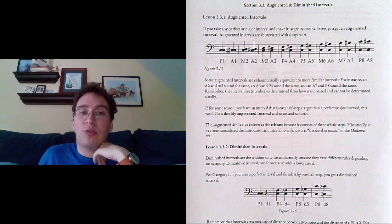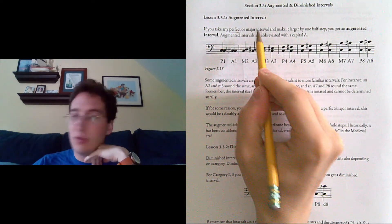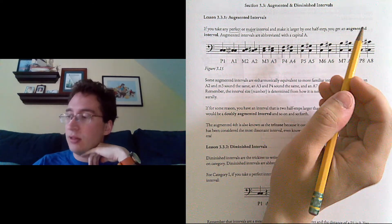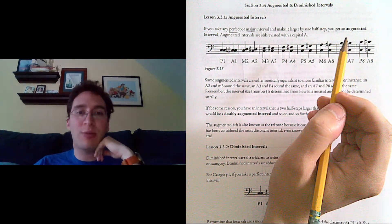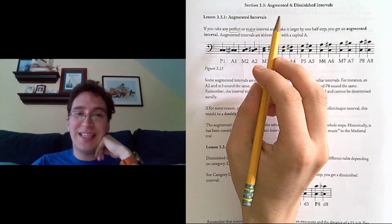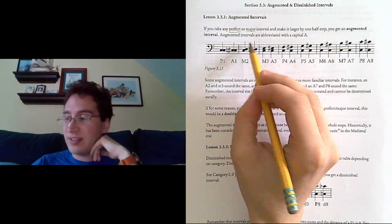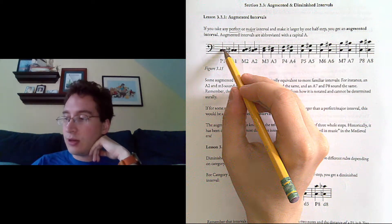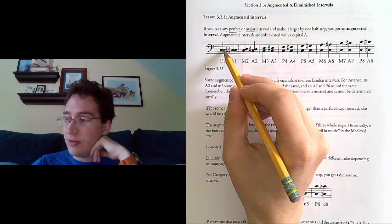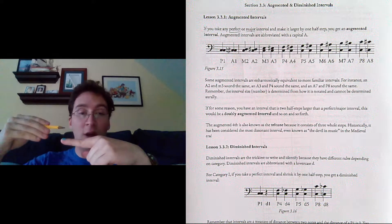Augmented intervals can either be category 1 or category 2. If you take any perfect or major interval and make it larger by a half step, you get an augmented interval. Notice that it will have to stay the same in terms of where it's written on the staff. So here you have a perfect unison. If you make one of those C's a C sharp, making it larger by a half step, you get an augmented unison.